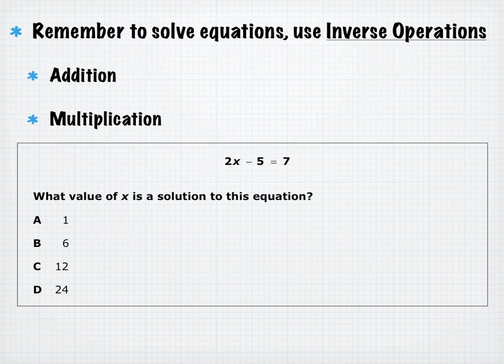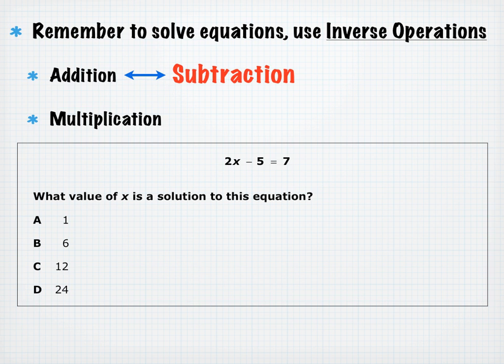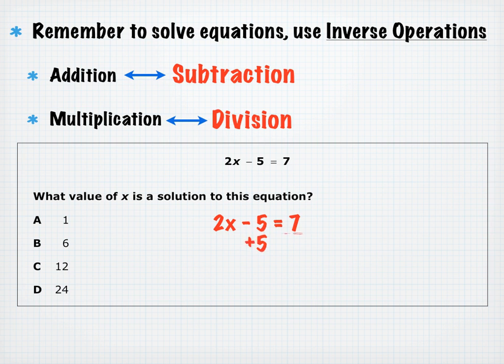To solve equations, use inverse operations — opposite operations undo each other. The opposite of addition is subtraction and vice versa; multiplication and division are also inverse operations. For the equation 2X minus 5 equals 7, first add 5 to both sides to get 2X equals 12, then divide both sides by 2 to get X equals 6.